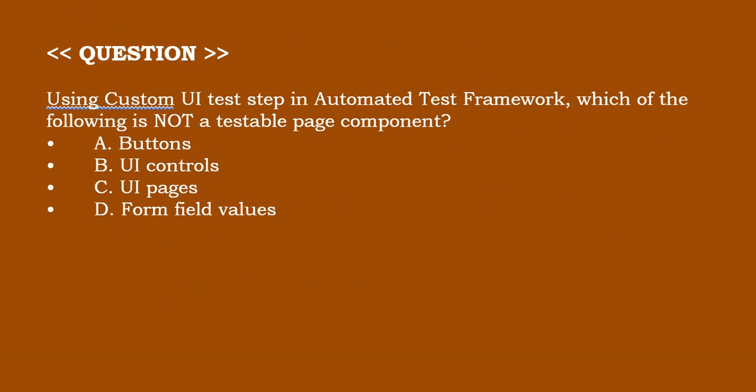Using custom UI test step in automated test framework, which of the following is not a testable page component? Option A: Buttons. Option B: UI controls. Option C: UI pages. Option D: Form field values. The correct answer is Option D.